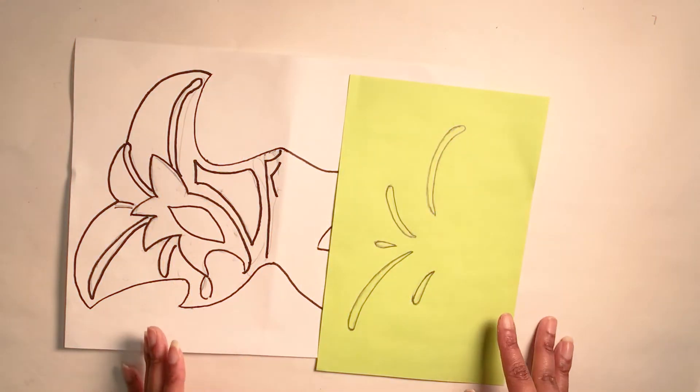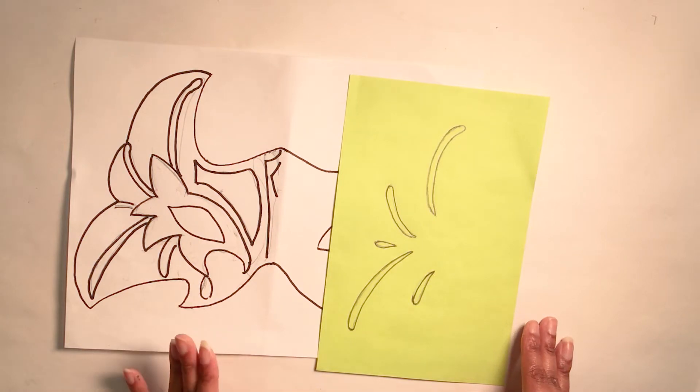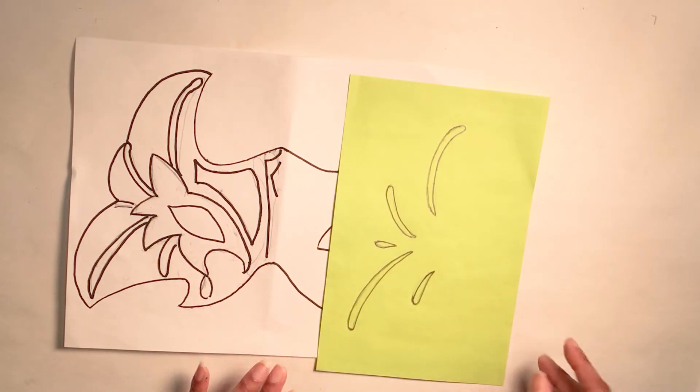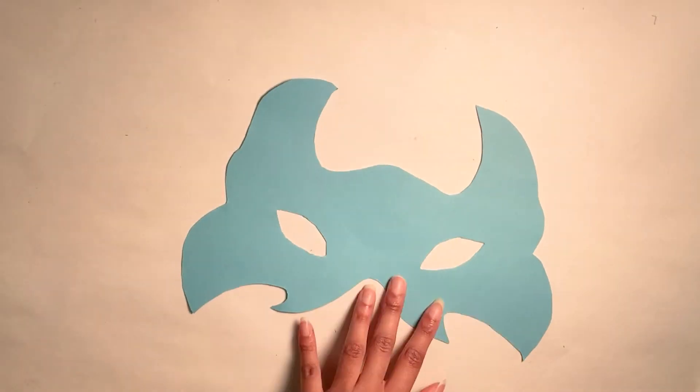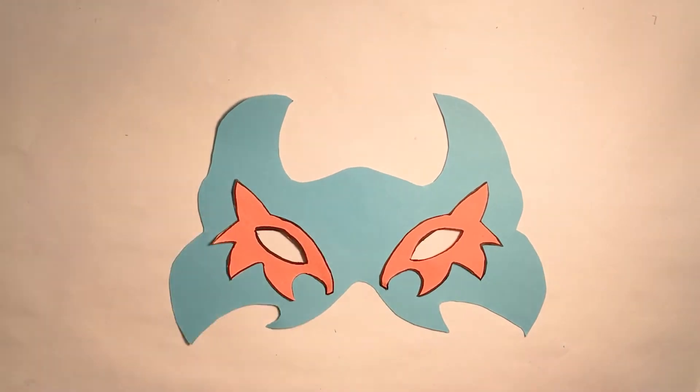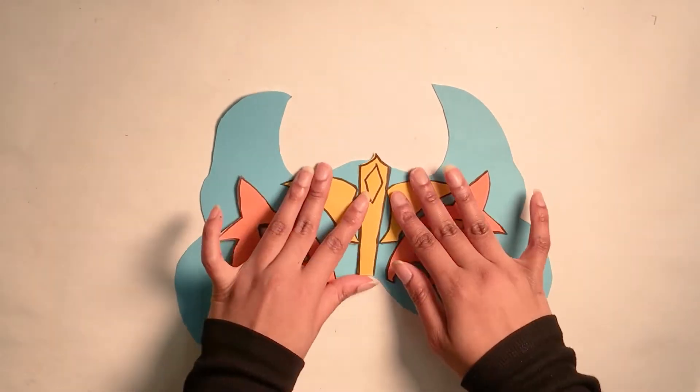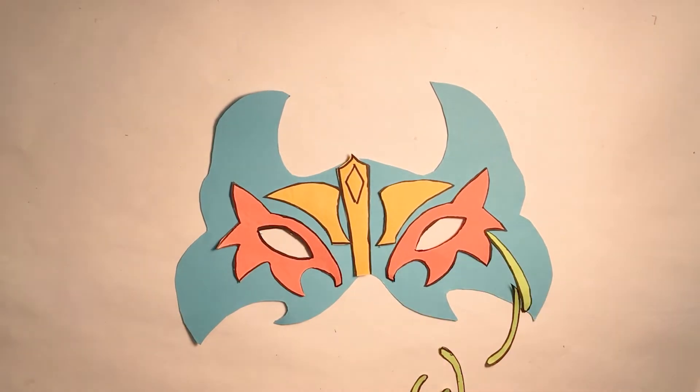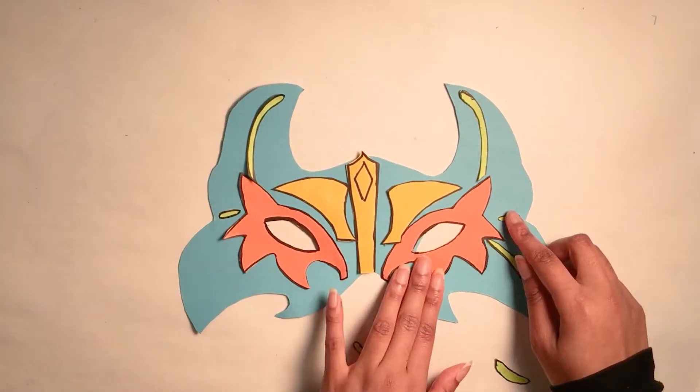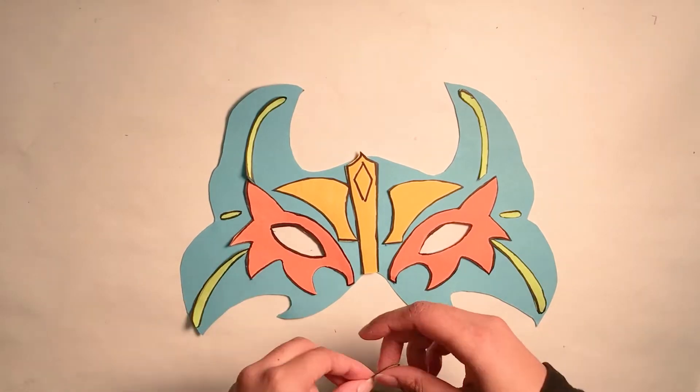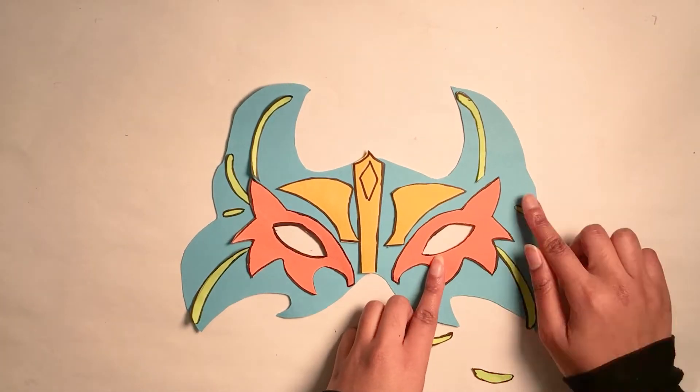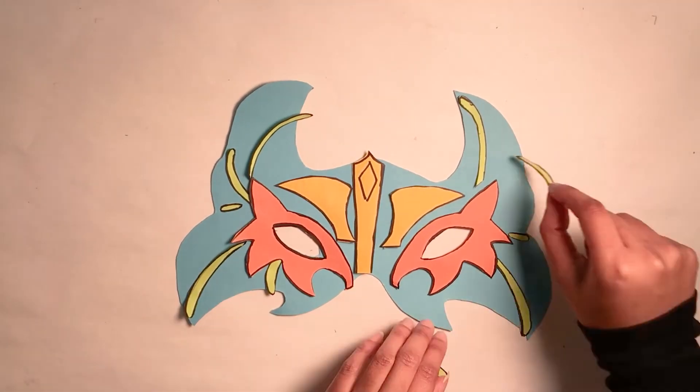The next step is to put your designs onto a new piece of paper and then cut them out. After cutting your pieces, you should lay them on top of your base so you know how it looks. And if you're satisfied, you can glue them on.